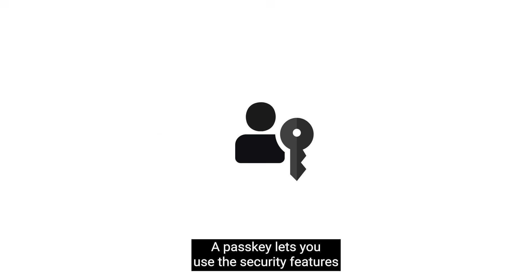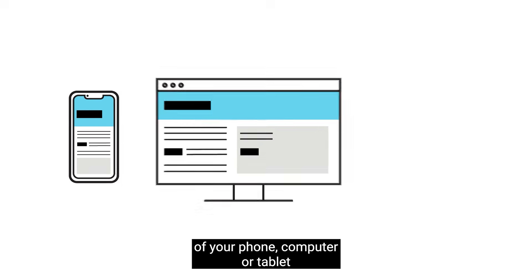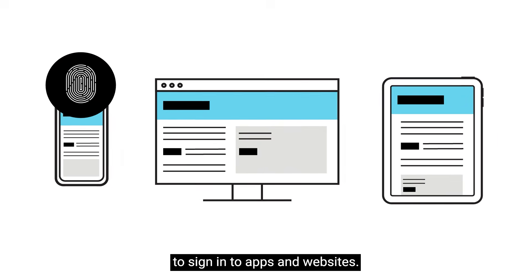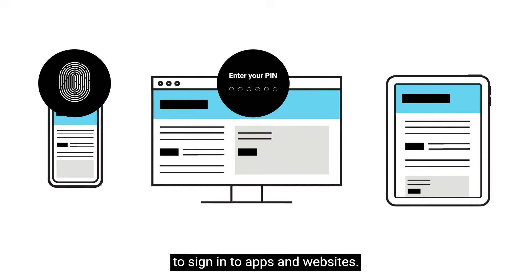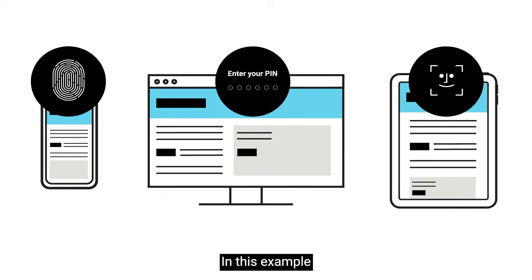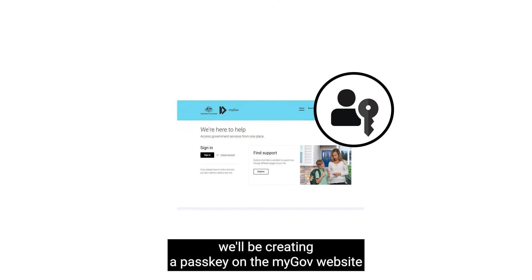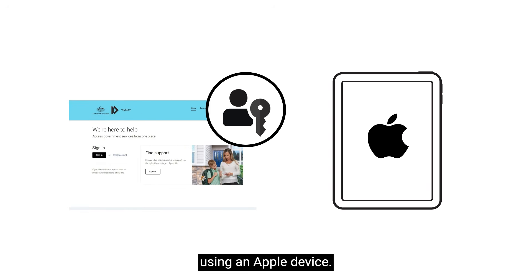A passkey lets you use the security features of your phone, computer or tablet to sign into apps and websites. In this example, we'll be creating a passkey on the myGov website using an Apple device.